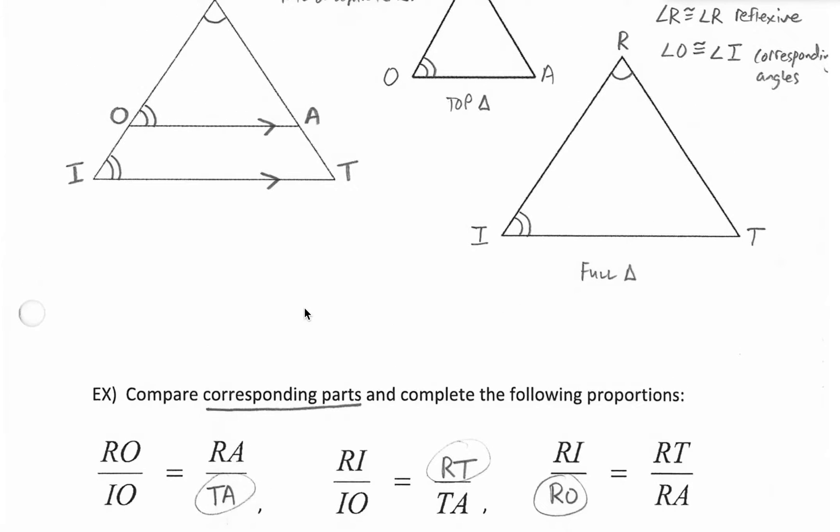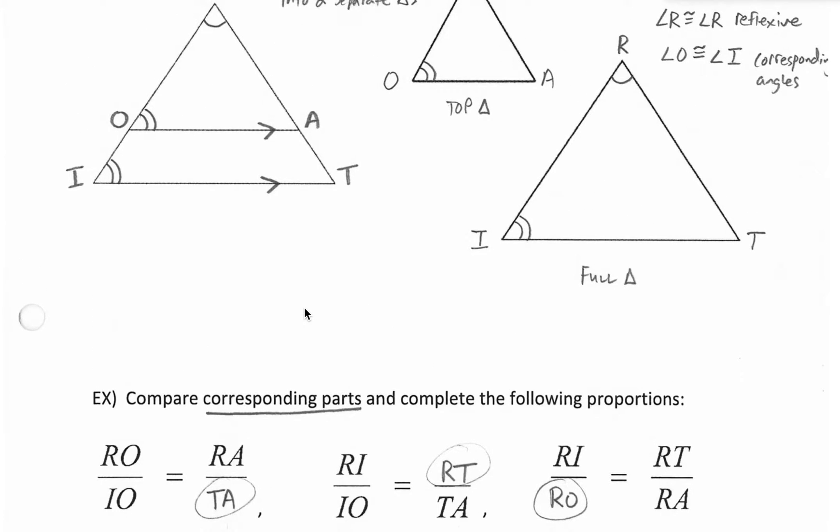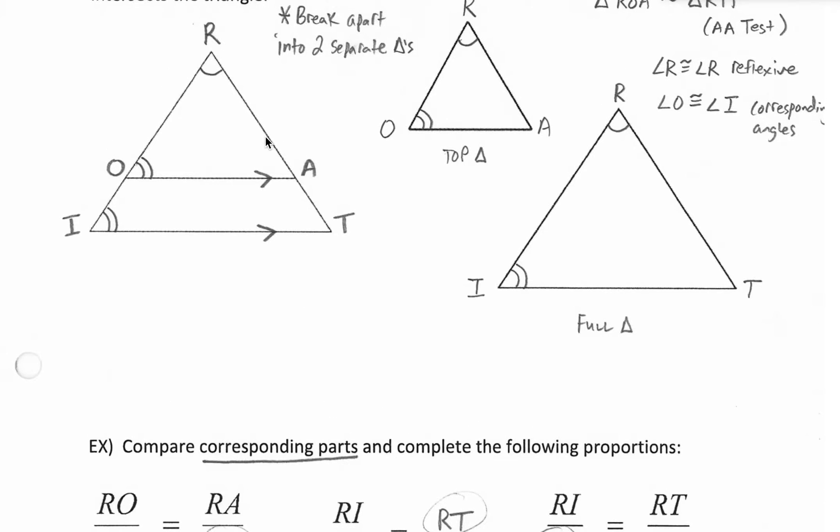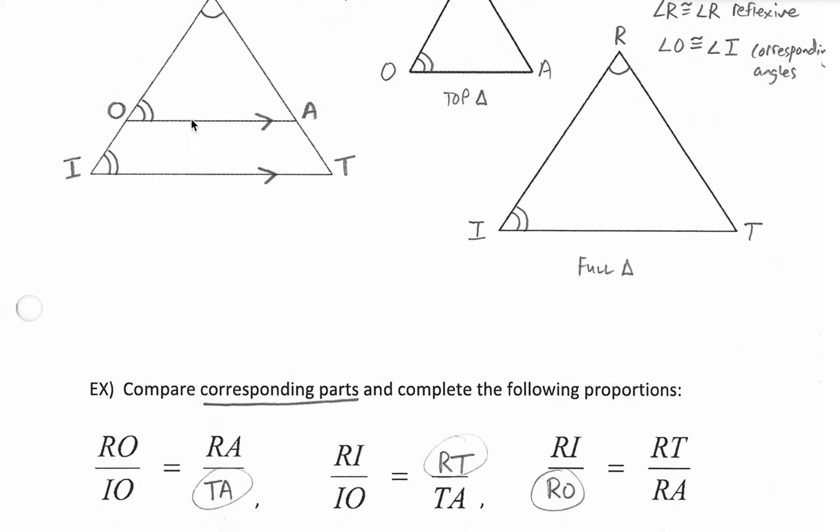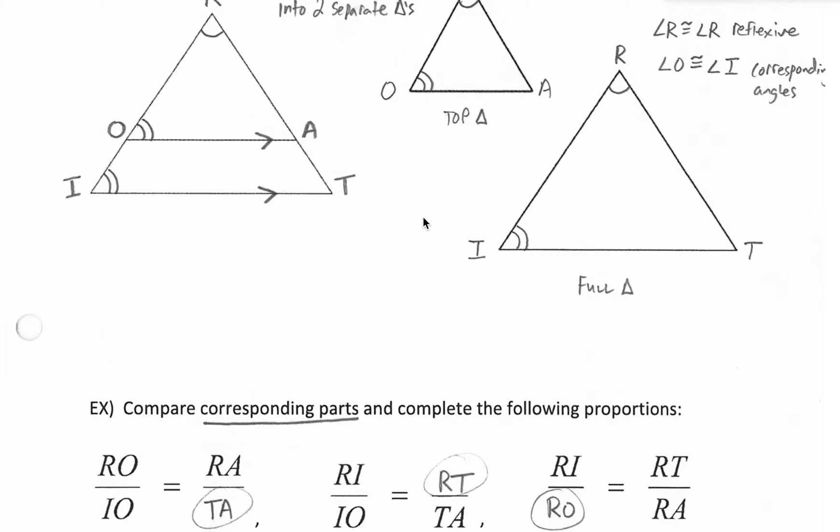So we're just going to practice comparing proportional parts here based on the vertices in these triangles here. So we could look at the left diagram to finish it or a good cheat here is to just always separate your triangles and then the corresponding parts are much easier to compare. But we could do either.